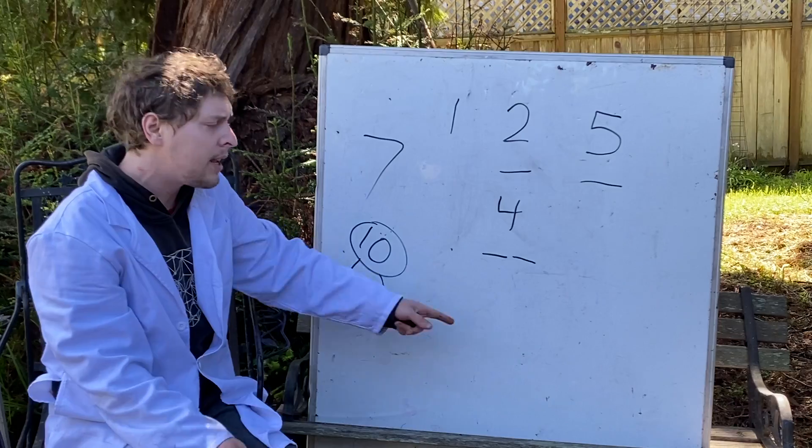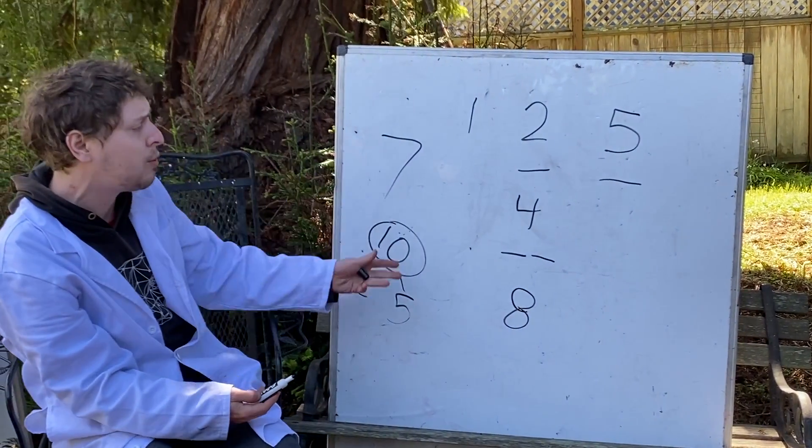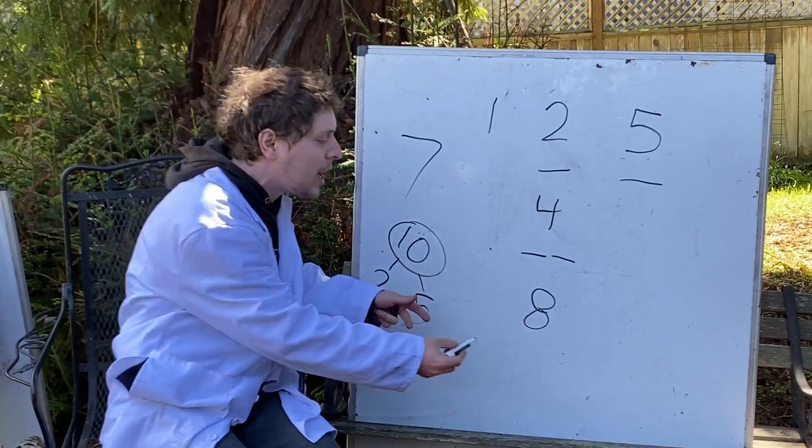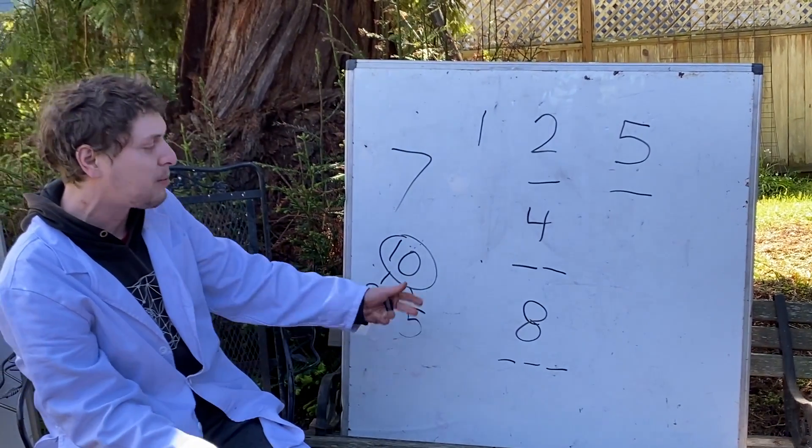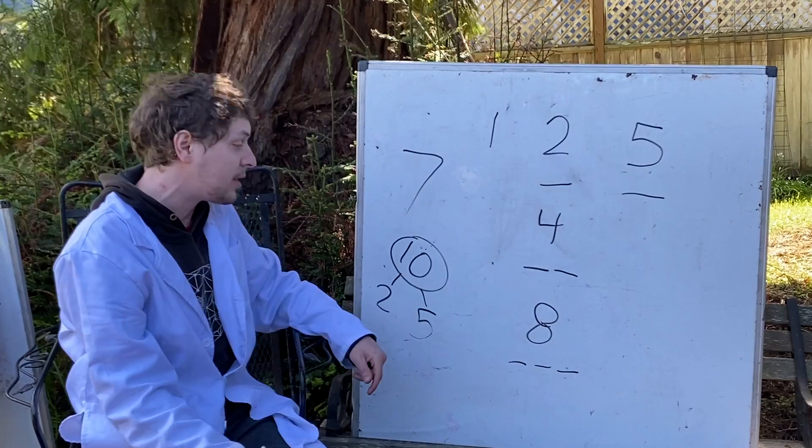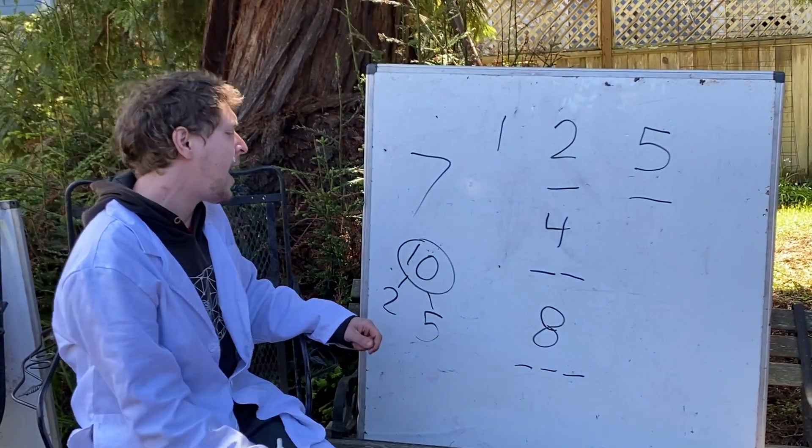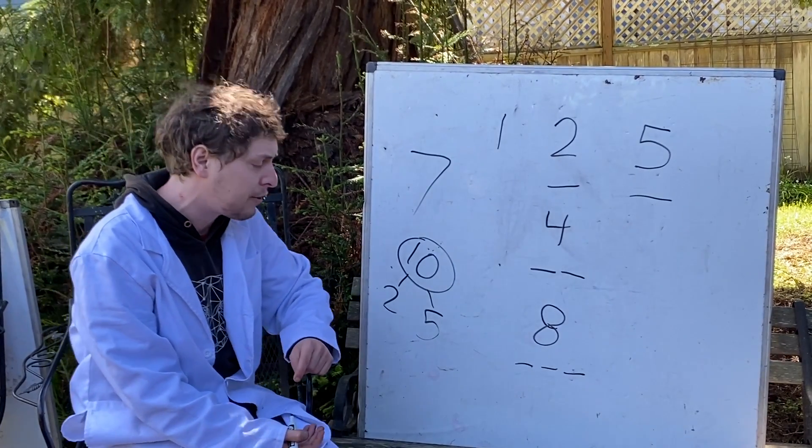Now, with 8, we can even take this one step further. 8 is 2 cubed. And to know if something's a multiple of 8, you only need to check the last three digits. If the last three digits of a number are divisible by 8, the whole number is. For similar reasons, where the rest would refer to thousands, and thousands are divisible by 2 cubed times 5 cubed.